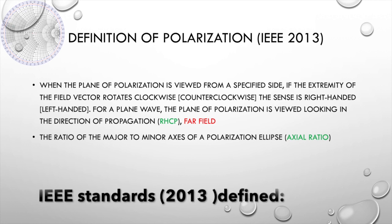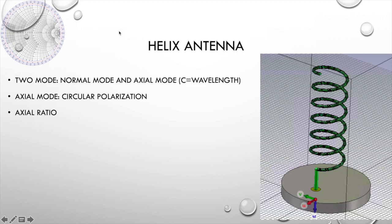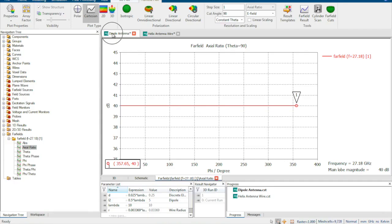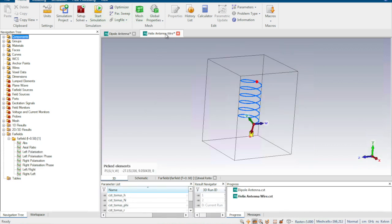IEEE standards define right-hand circular polarization and the axial ratio, as shown here. In this video, we will use two antennas to demonstrate these concepts. We know that a helix antenna is circular polarized when end-fired, and a dipole antenna is broadside-fired so it is linearly polarized. I have already built both a dipole antenna and a helix antenna in CST.